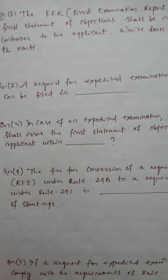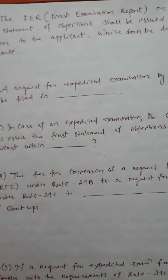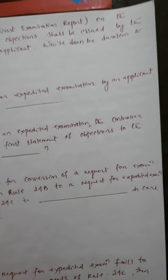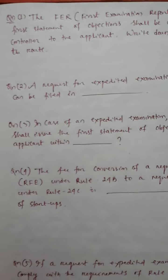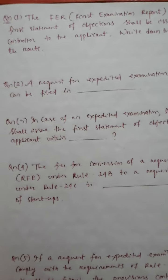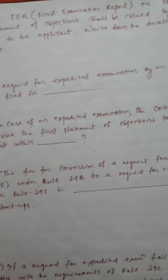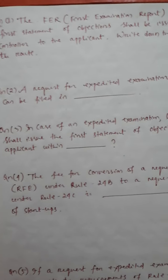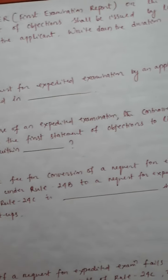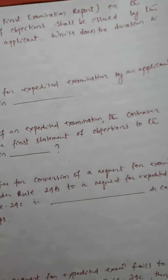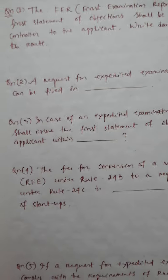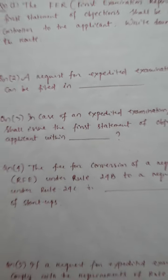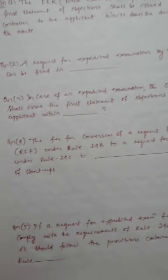Question number 1: The FER, or the First Examination Report, or the first statement of objections shall be issued by the controller to the applicant. Write down the duration and the route.